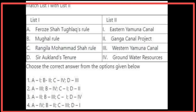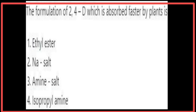The first question is about matching List 1 with List 2. Feroz Shah Tughlaq's rule is related to the Western Yamuna Canal. Mughal rule is related to groundwater resources. Rangila Muhammad Shah's rule is related to the Eastern Yamuna Canal. Sir Oklan's tenure is related to the Ganga Canal project. The formulation of 2,4-D which is absorbed faster by plants is ethyl ester.